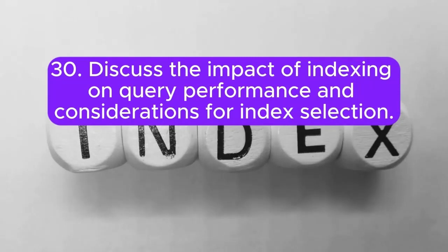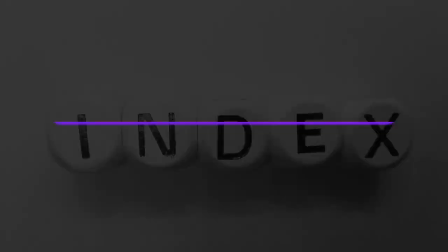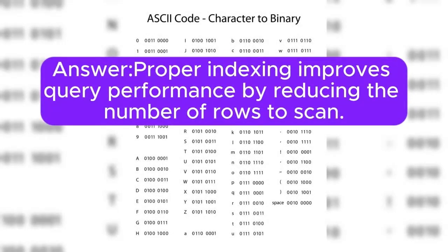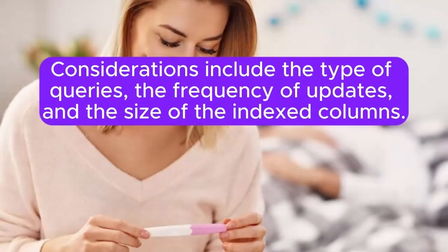Question 30: Discuss the impact of indexing on query performance and considerations for index selection. Answer: Proper indexing improves query performance by reducing the number of rows to scan. Considerations include the type of queries, the frequency of updates, and the size of the indexed columns.